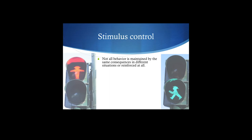So about stimulus control — the visual example here is pretty clear. The red light is a discriminative stimulus signaling that staying in place will be reinforced by avoiding getting run over by a car. The green light signals you'll be reinforced for crossing the street. You have two different stimuli, both discriminative stimuli, signaling that a particular behavior will now be reinforced.